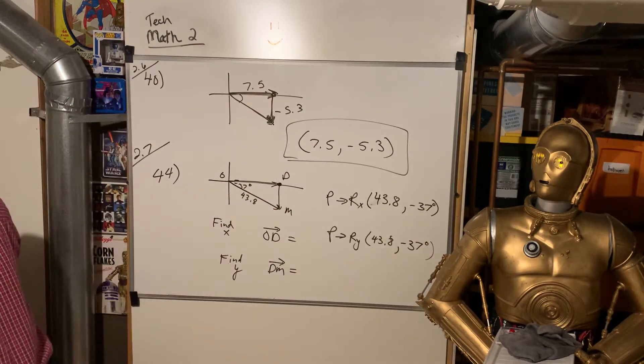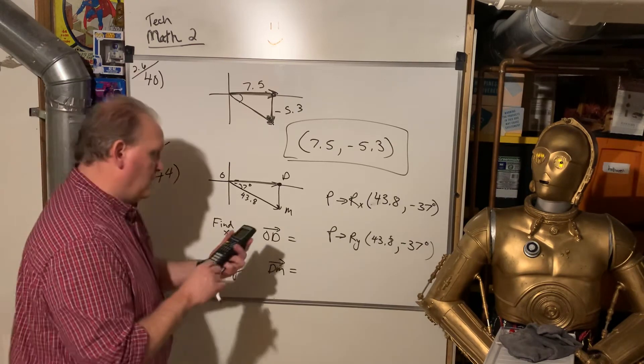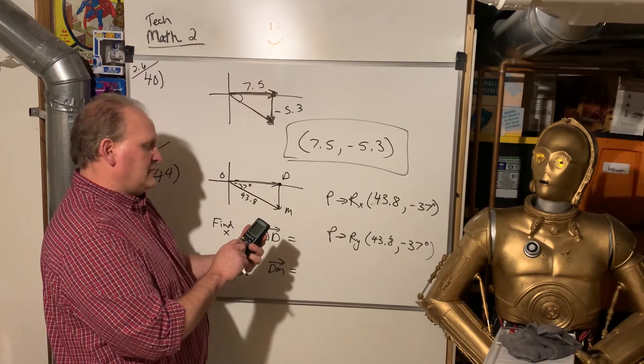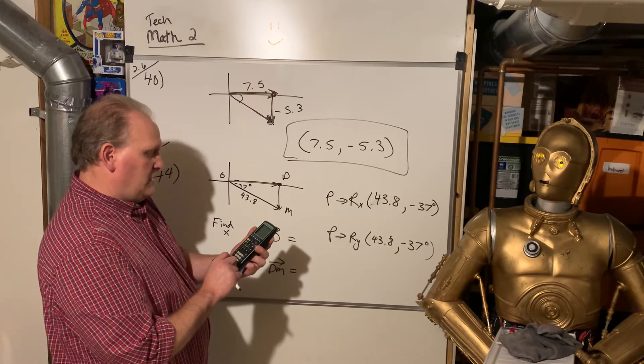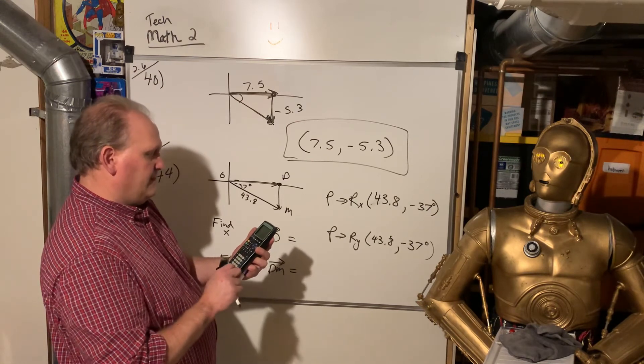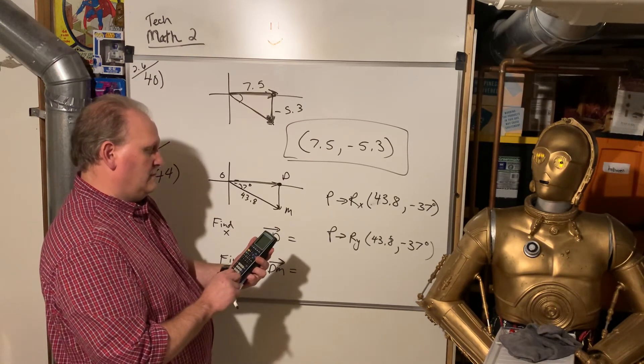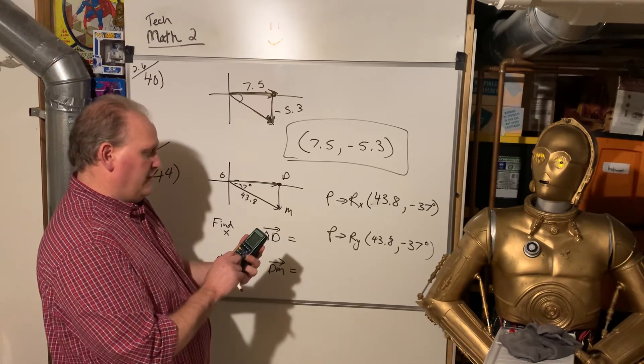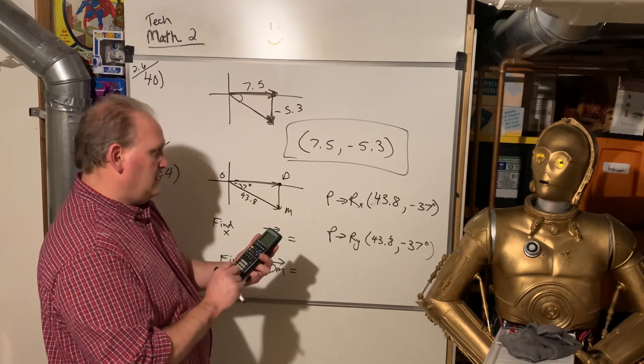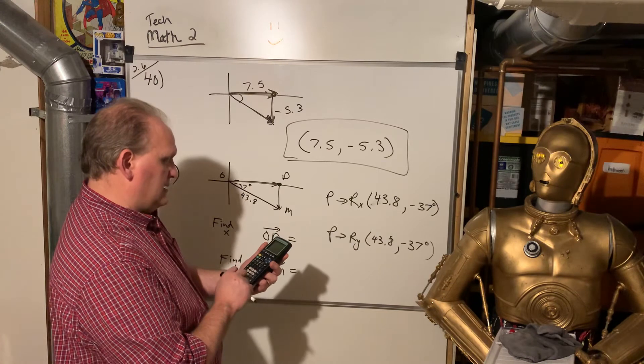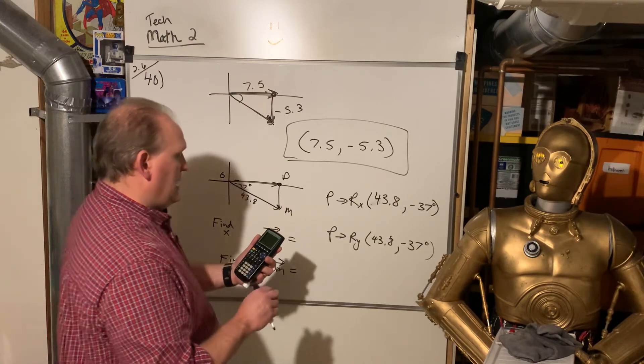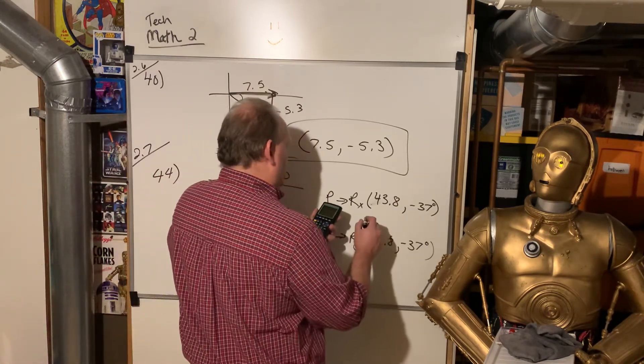All right? So here we go. Let's do polar. From polar to rectangular x of 43.8, comma negative 37. And polar to rectangular y, 43.8, comma negative 37 degrees. So we'll pop both of those into our calculator and see what we get. So second abs, polar to rectangular x, 43.8, comma negative 37. Enter. Oopsie. Oh, I had a four in front of it. Sorry. So second abs, polar to rectangular x, 43.8, comma negative 37. That's 34.98. We'll call it 35.0.